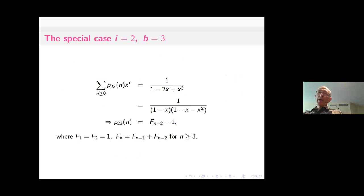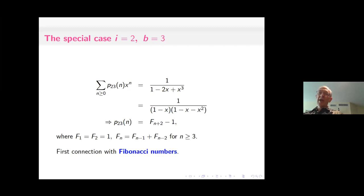We get this recurrence — a linear recurrence with constant coefficients, so it has a rational generating function. With the initial conditions, the generating function for the number of elements of rank n is 1 / (1 − I·x + (I−1)·x^B). In the case I equals 2, B equals 3, this specializes to 1 / (1 − 2x + x³), which factors in such a way that the number of elements of rank n is the (n+2)nd Fibonacci number minus 1, using the initial conditions F₁ = F₂ = 1. This is the first connection to the Fibonacci numbers.